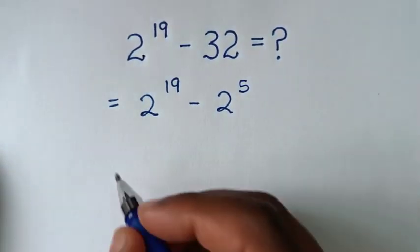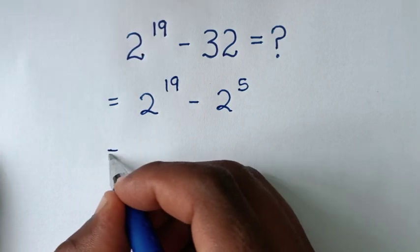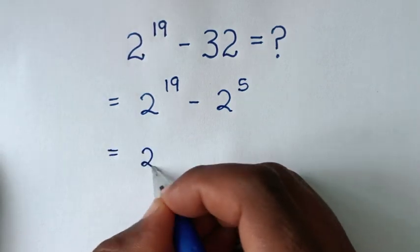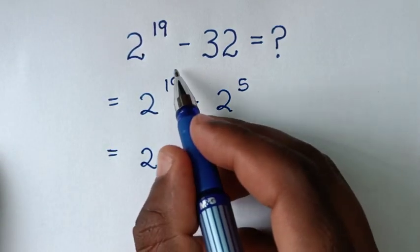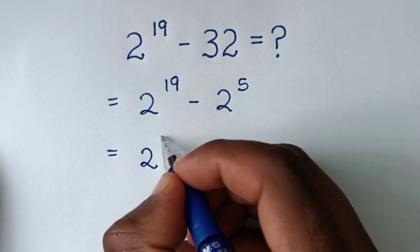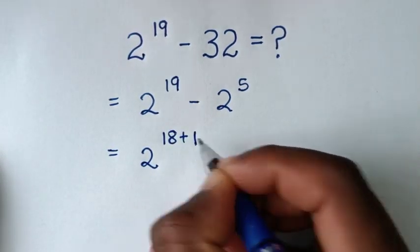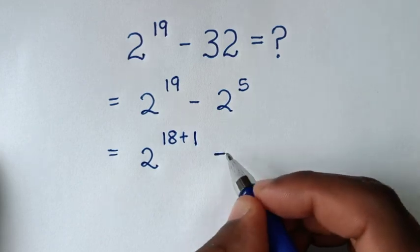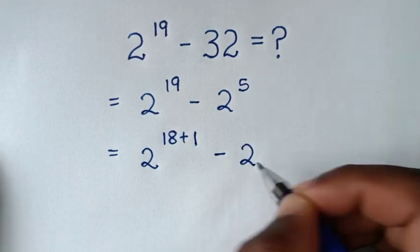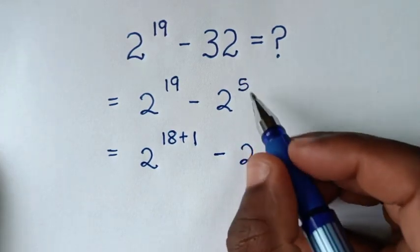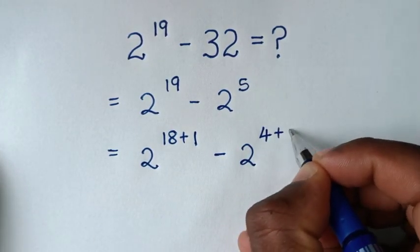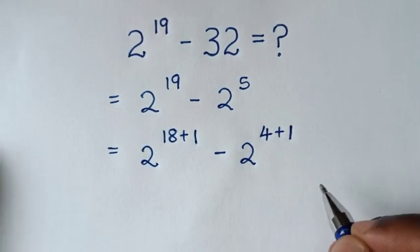In the next step, it will be equal to 2 power of 19, which is the same as 2 power of 18 plus 1. Then minus 2 power of 5, which is the same as 2 power of 4 plus 1.